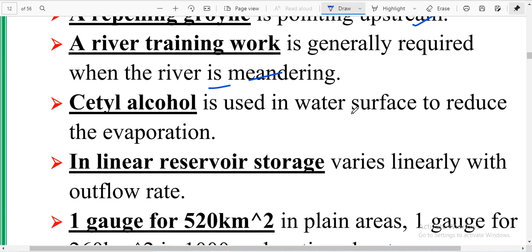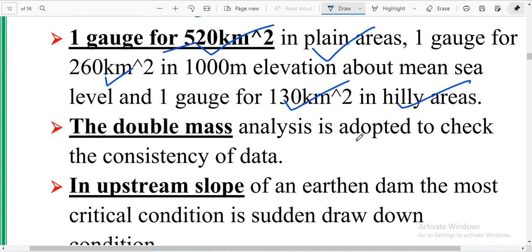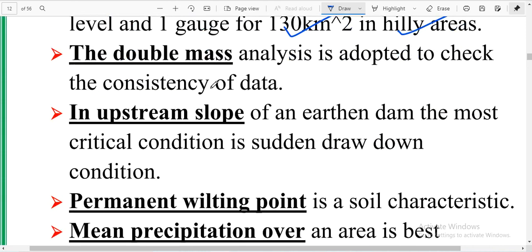Groin is pointing upstream and river training work is generally required when the river is meandering. In plain area, catchment area minimum is 520 square kilometers. If elevation is 100 meters, it is 260 square kilometers. For 1000 meters elevation, it is 130 square kilometers in hilly area. Double mass analysis is used.